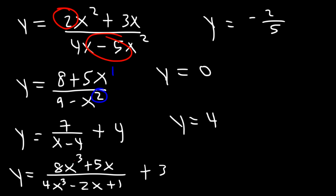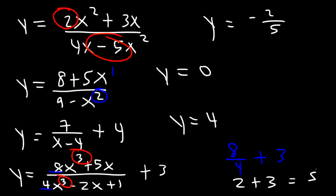In this example, the degree of the numerator is the same as that of the denominator, so we need to divide the coefficients 8 and 4. So we have 8 divided by 4, plus 3. 8 divided by 4 is 2, and 2 plus 3 is 5. So the horizontal asymptote is y is equal to 5.